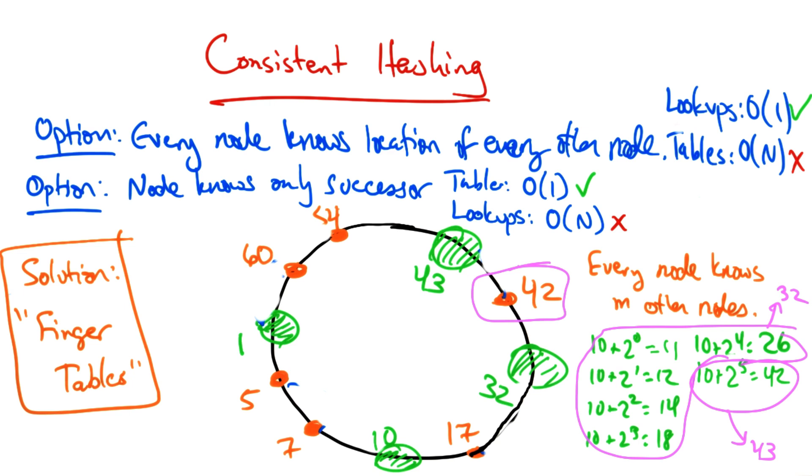Now every node knows its immediate successor. So what we want to do is find the predecessor for a particular ID, and then ask for the successor of that ID.